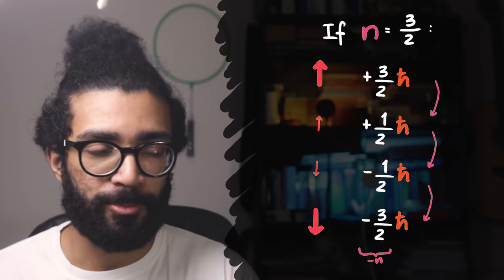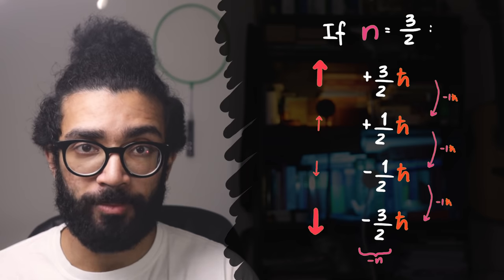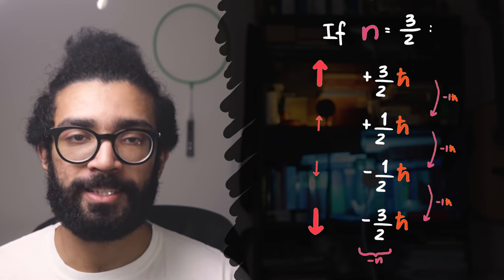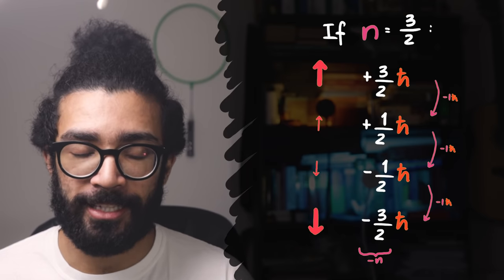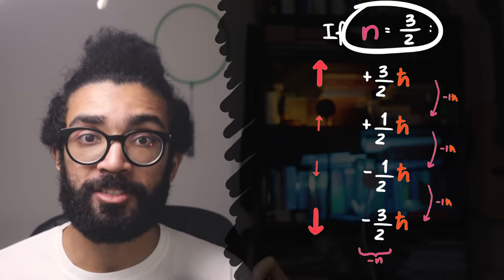And that's it. So the spacing between spin states is actually h-bar, interestingly. And so that's how you can calculate all of these spin states and the angular momentum that the particle will have in each particular state, simply by knowing its spin number.